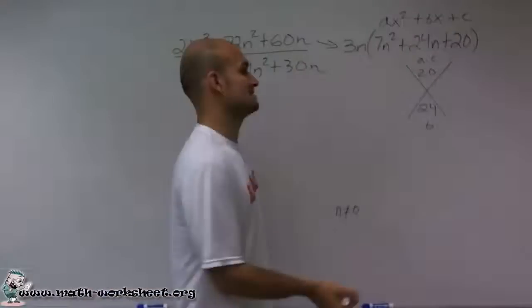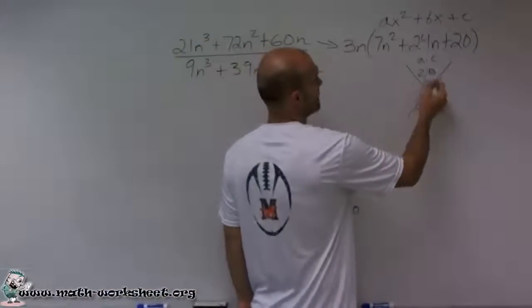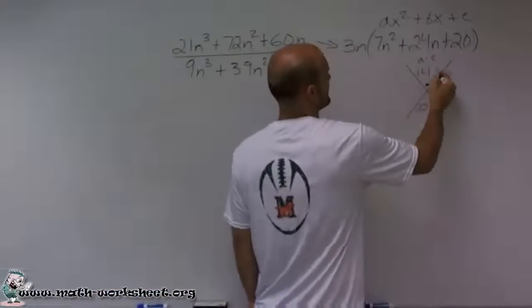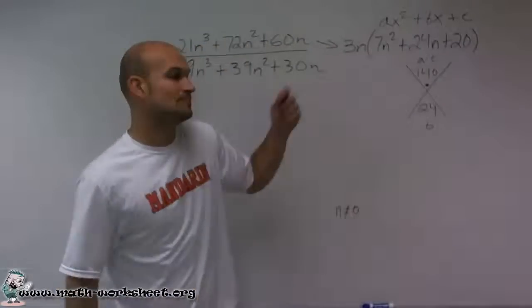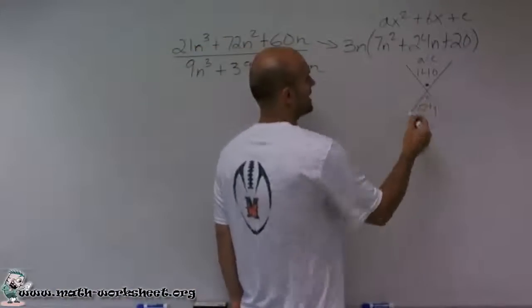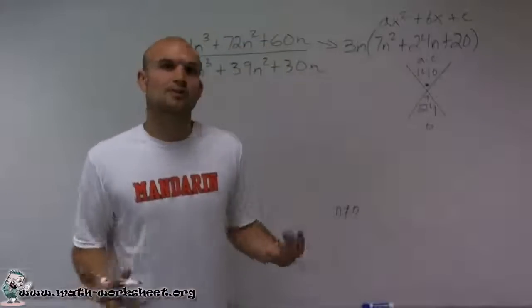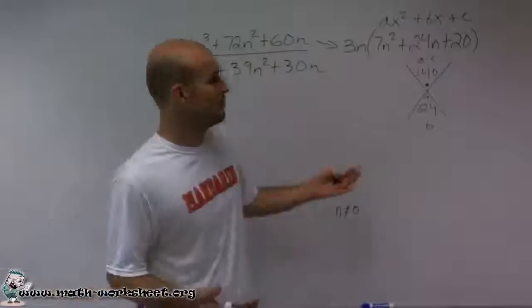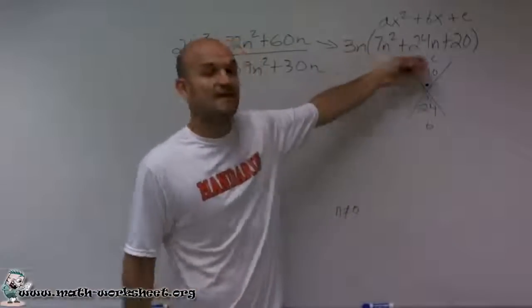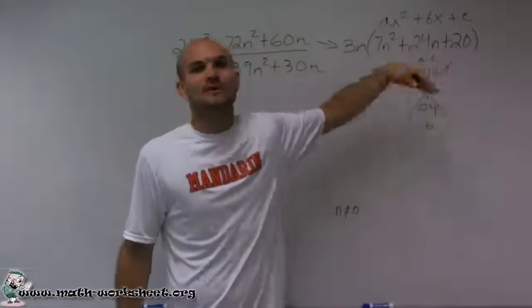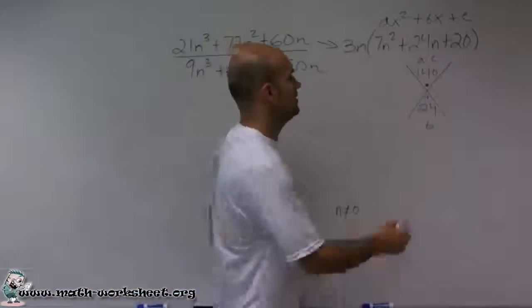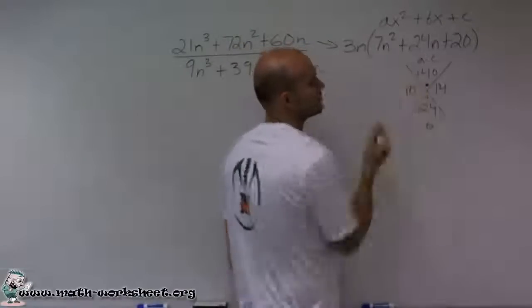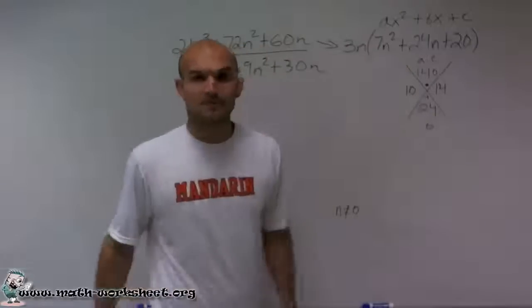Then, to help me factor this out, I could say what two numbers multiplied? 7 times 20 is 140. So what two numbers multiply to give me 140, but add to give me 24? So what we want to do is think about all the factors, or numbers that add up to give you 24. Think of the factors of 140, but which ones add up to give you 24? Well, your answer could be 10 and 14, because 10 times 14 is 140, and they add up to 24.